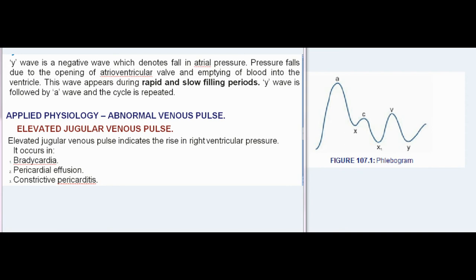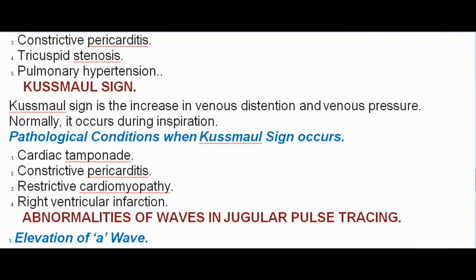Applied physiology: Abnormal venous pulse. Elevated jugular venous pulse indicates the rise in right ventricular pressure. It occurs in bradycardia, pericardial effusion, and constrictive pericarditis.